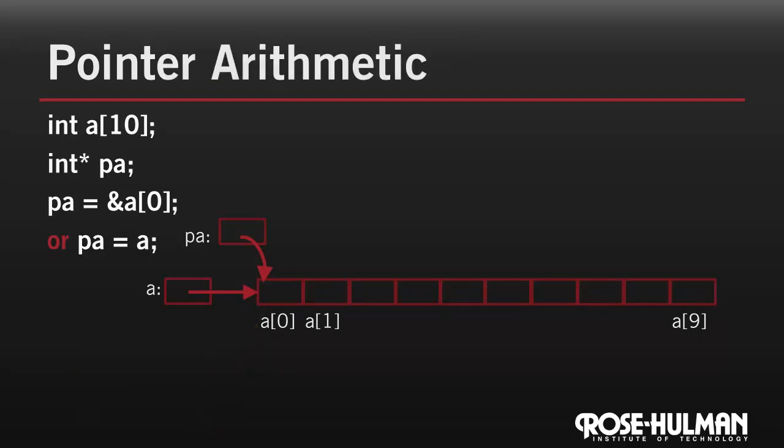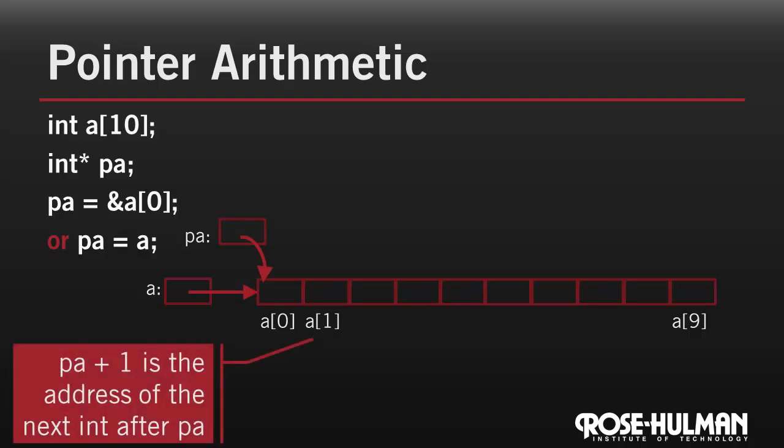But that's not all. Since the elements of an array are stored right next to each other in memory, we can calculate the address of the next element in the array very easily. It's just the address of the first element, plus the size of one integer. The designers of C made this address even easier to express. We can use the expression pa plus 1. The 1 works because pa is a pointer to an integer, and we're moving ahead by the size of 1 integer.